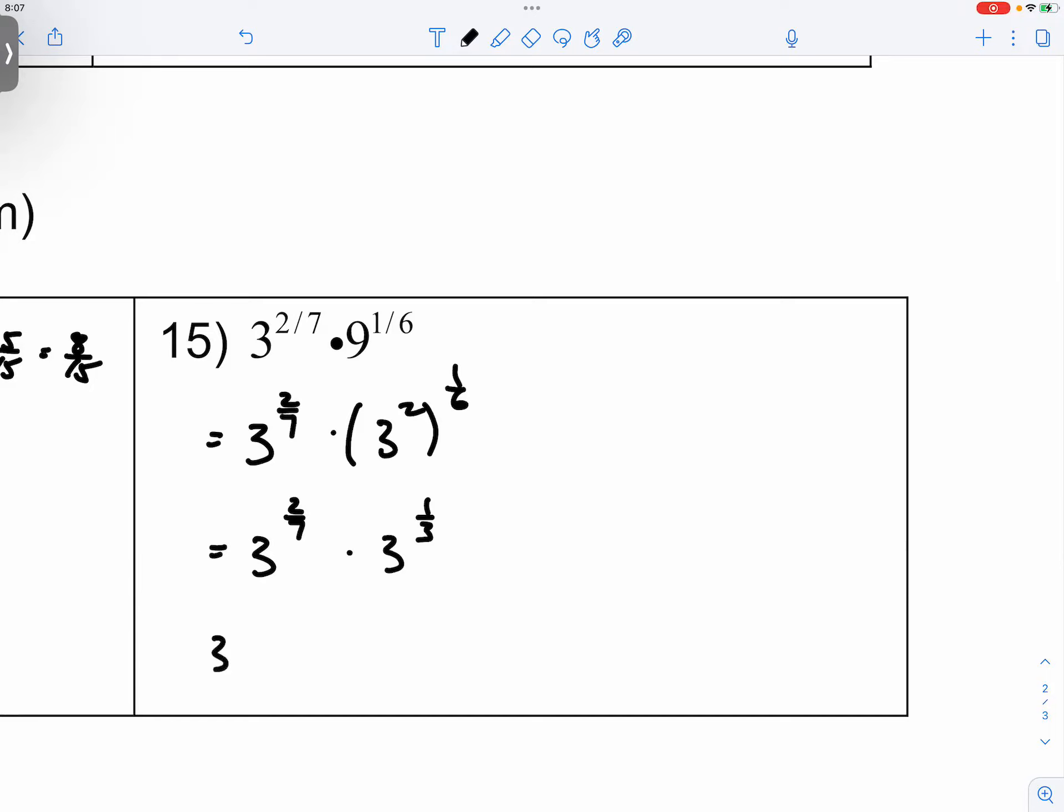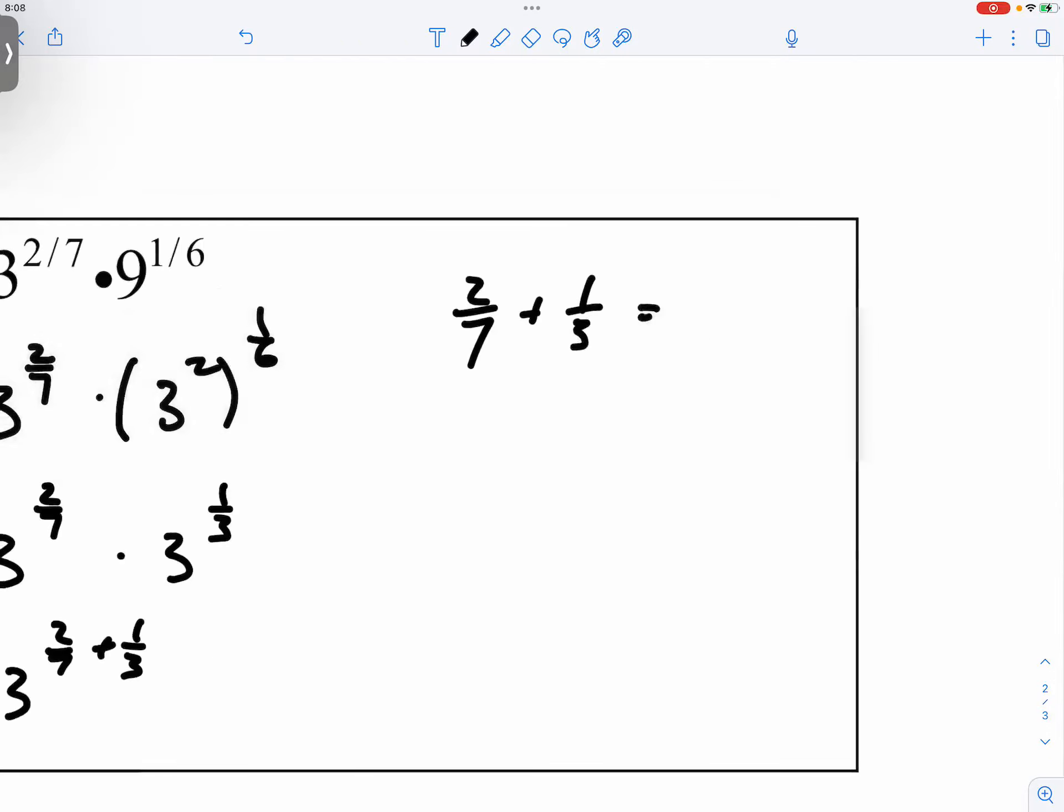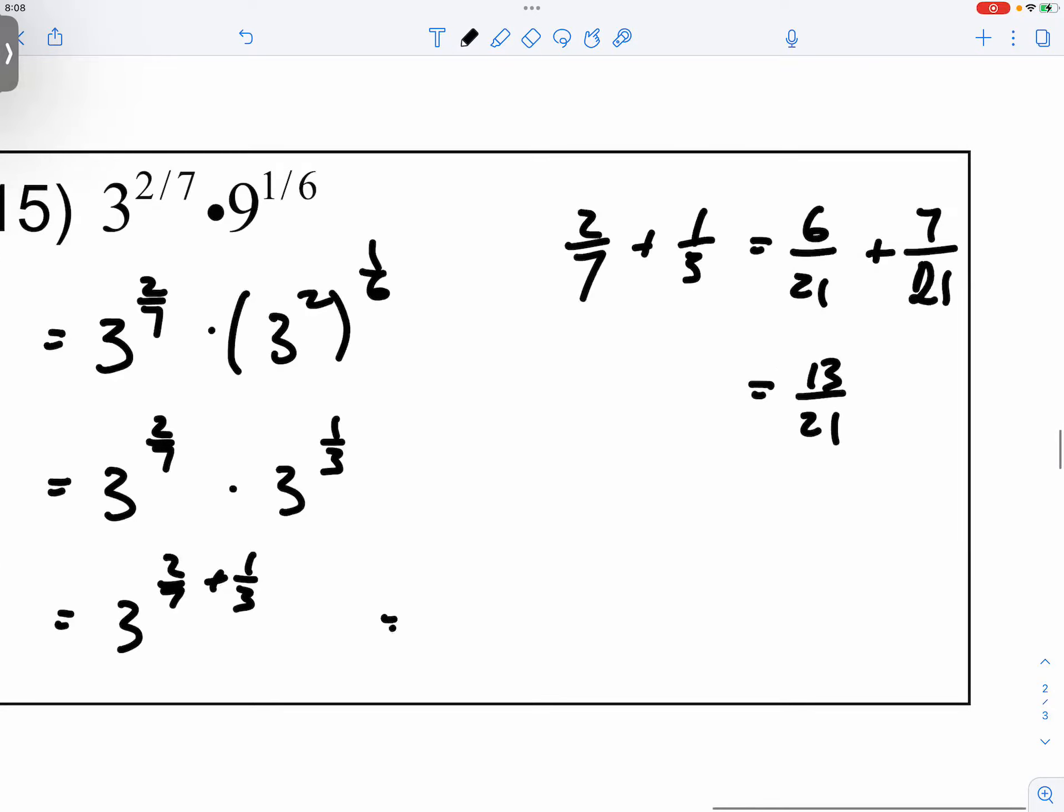So you have three to the two sevenths power and then three to the one third power. So they're going to add together. And let me go ahead and edit on the side. What's the common denominator? 21. So make sure that you execute this carefully and perfectly. So the answer is three to the 13 over 21 power.